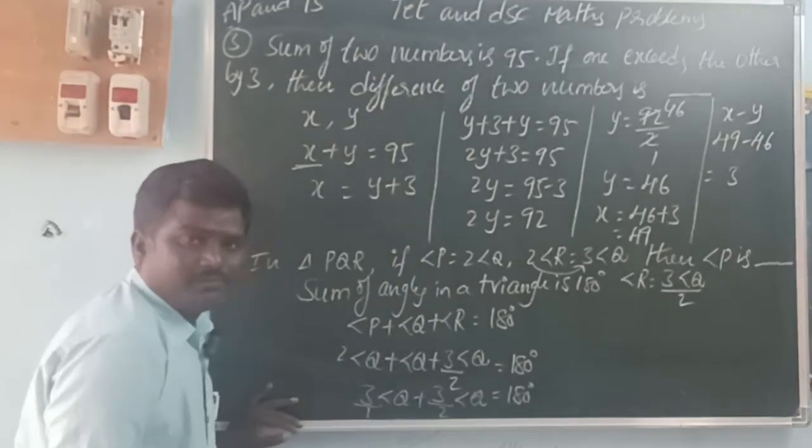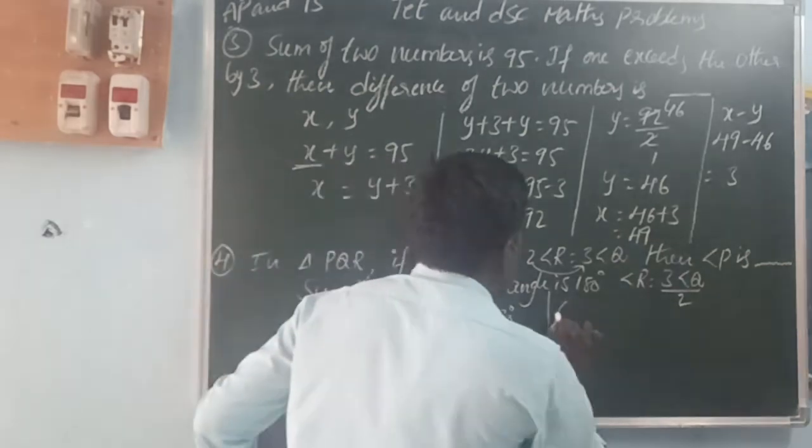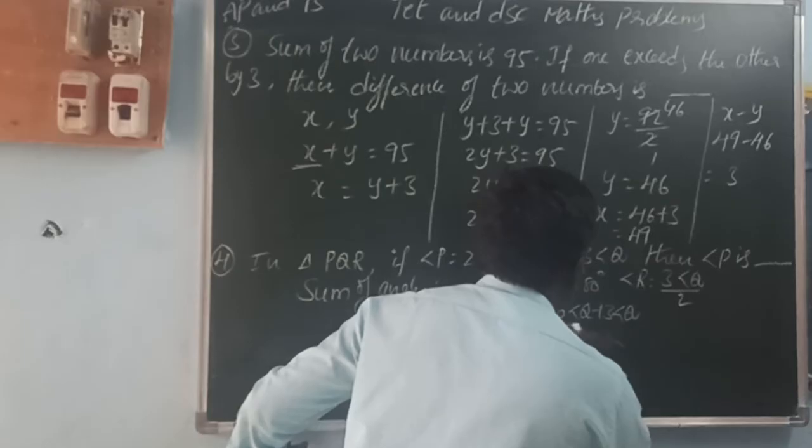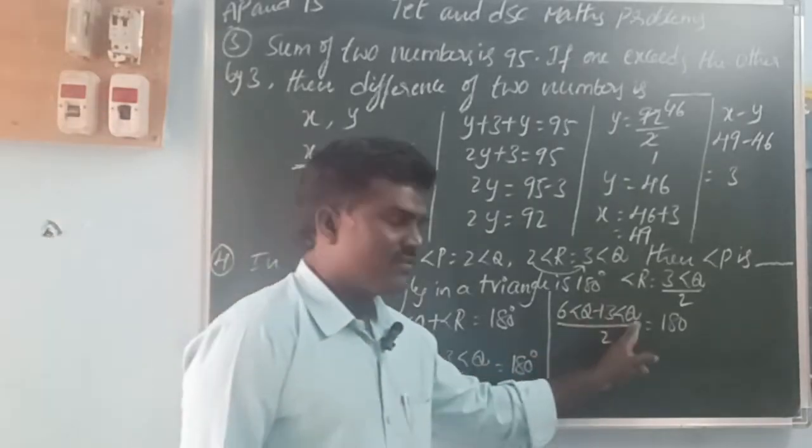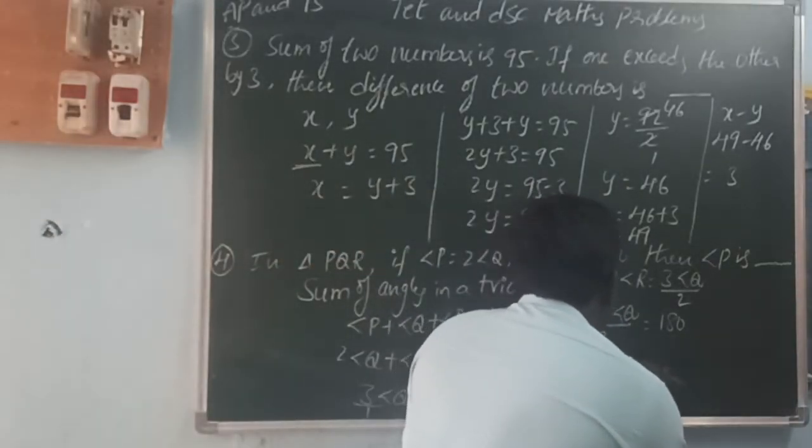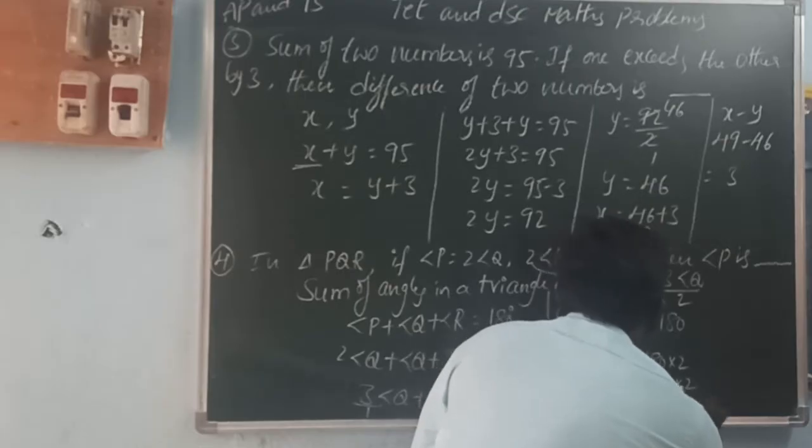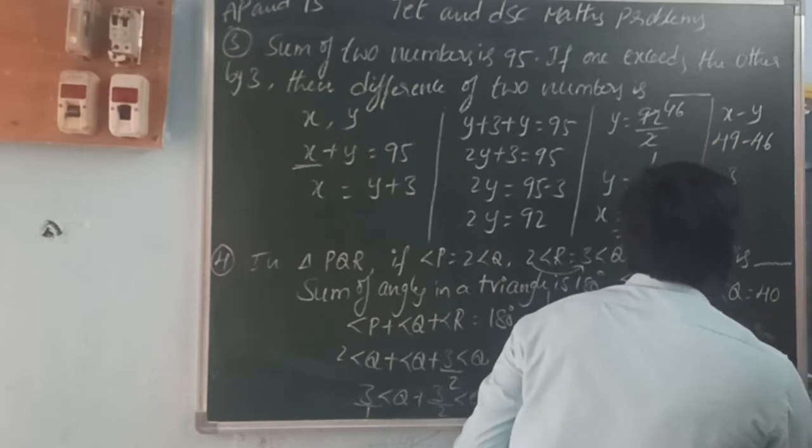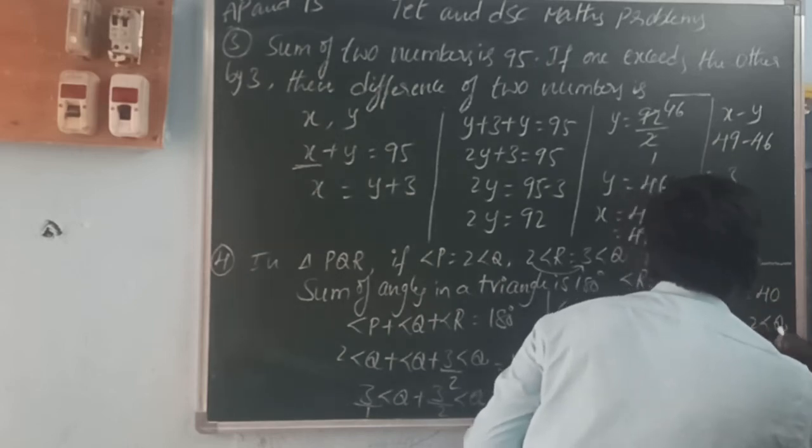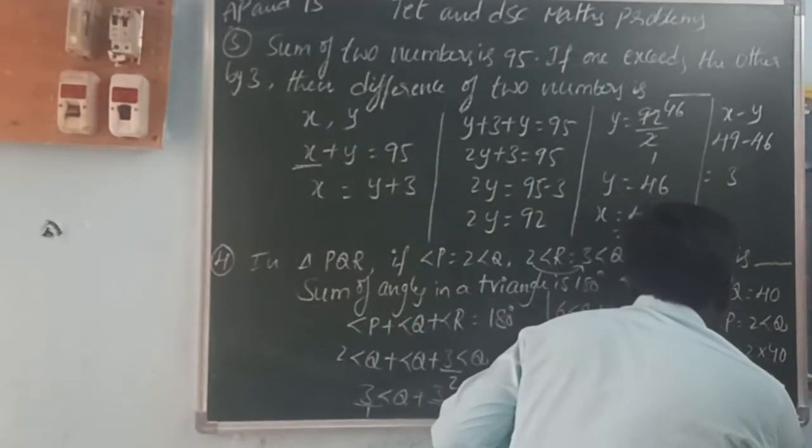Taking LCM: 6 angle Q plus 3 angle Q divided by 2 equals 180. So 9 times angle Q divided by 2 equals 180. Therefore angle Q equals 180 times 2 divided by 9, which is 40. So angle P equals 2 times 40, which is 80 degrees.